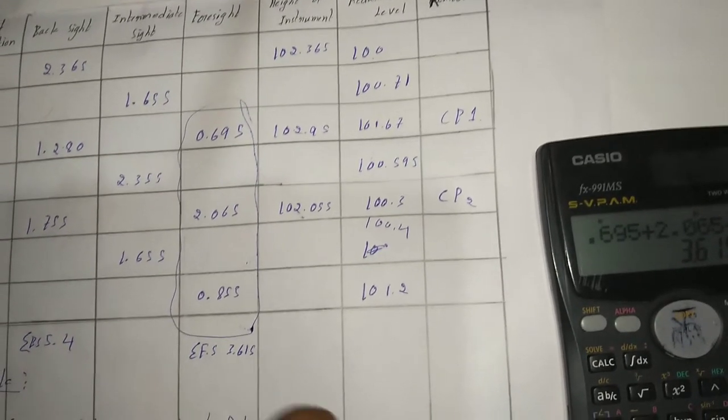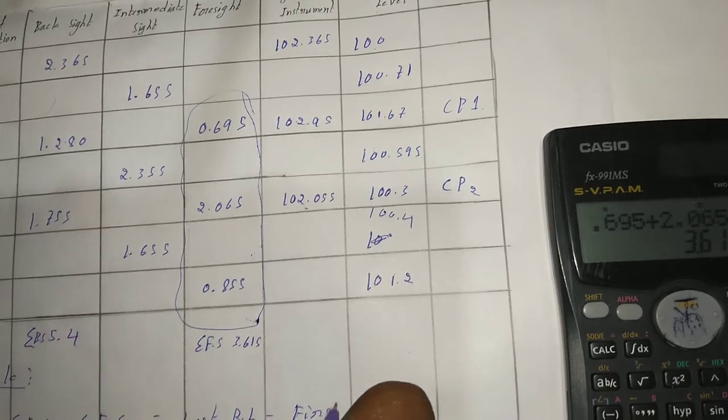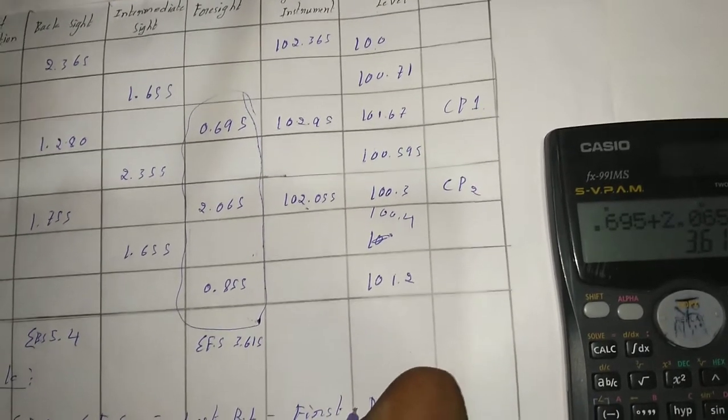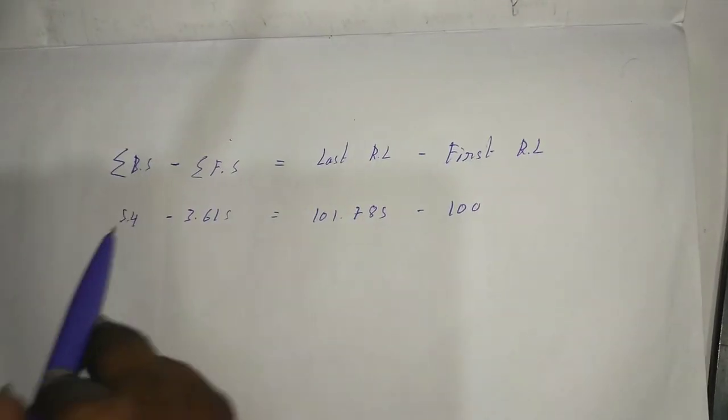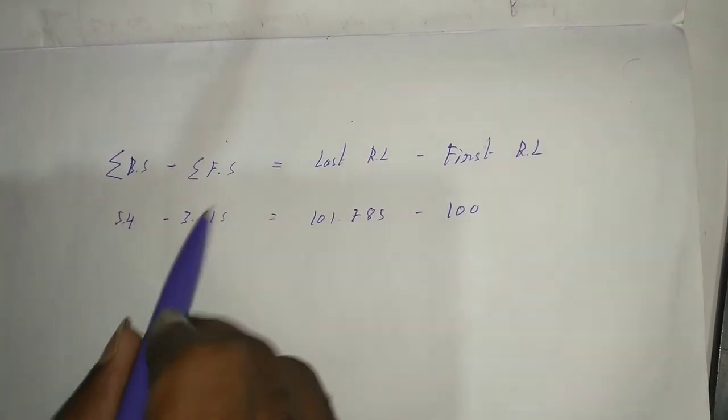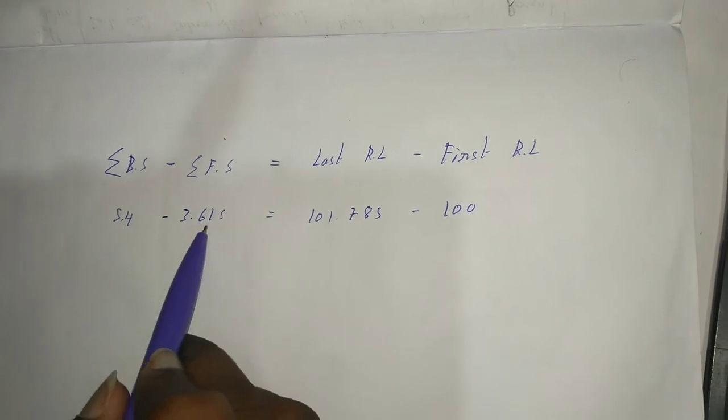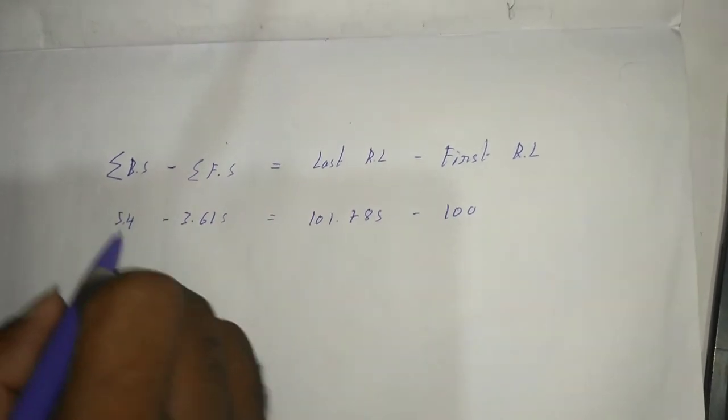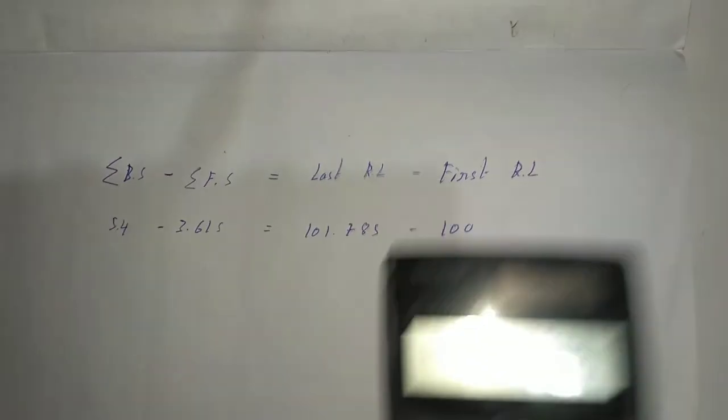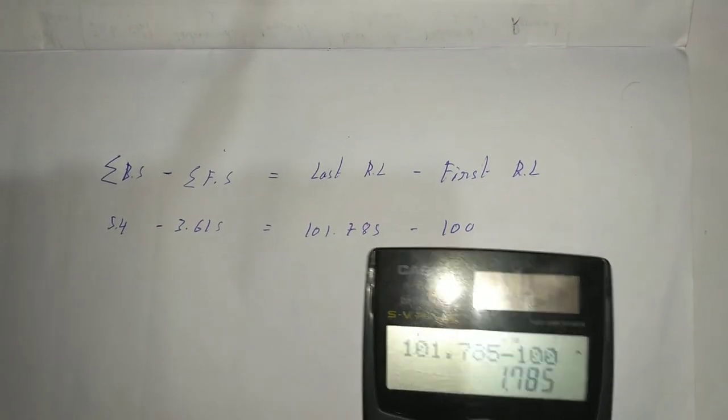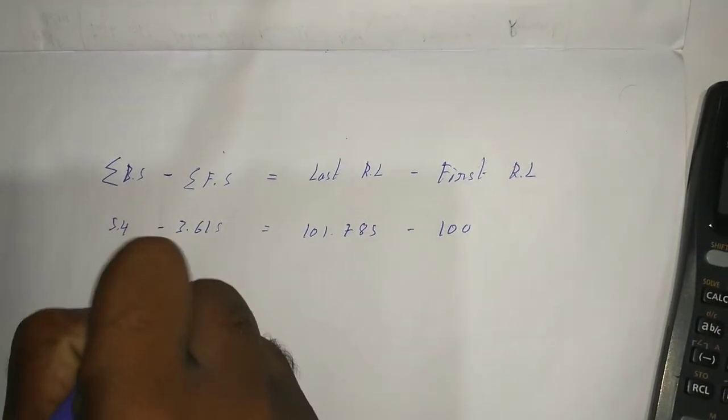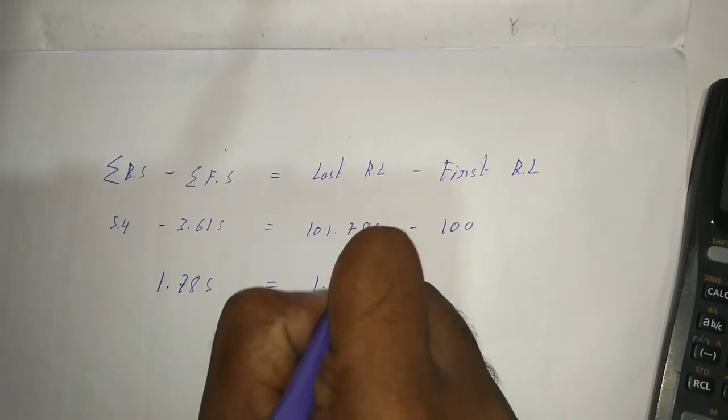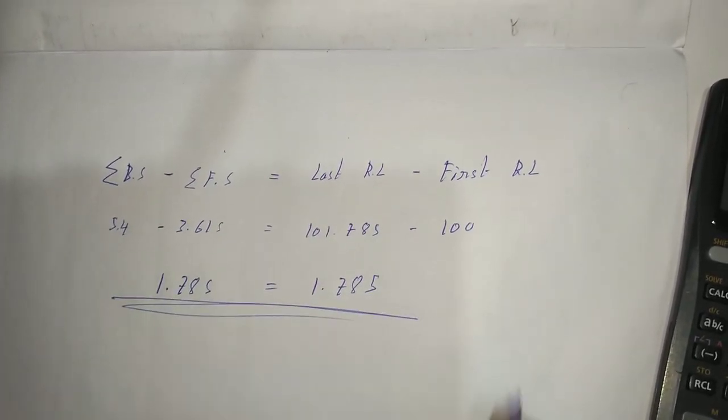And it is sigma backsight equal to 5.4, sigma foresight equal to 3.615. It is our last error, it is our first error. Then this case should to find out this, so I need to do. So our check is correct.